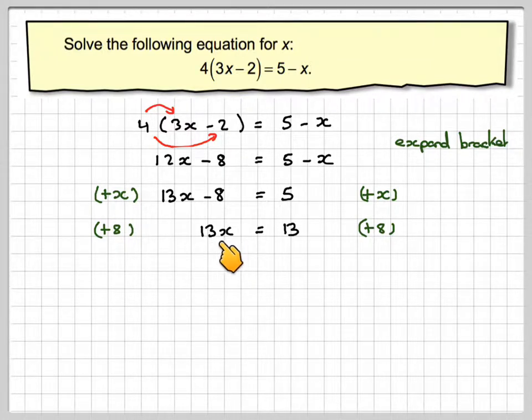Remember we're trying to reduce x on its own so we need to do the opposite of multiplying by 13 which is to divide both sides by 13. So if we divide this side by 13 we're going to get x and divide 13 by 13 we get the answer 1.